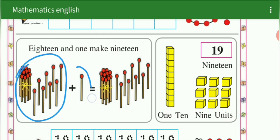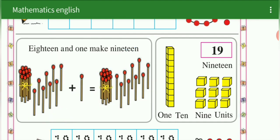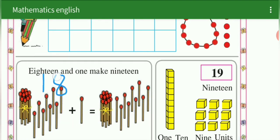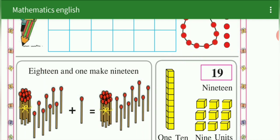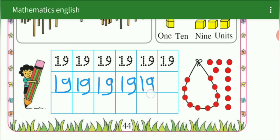18 plus 1 is equal to 19. See here — 19. We write 19.